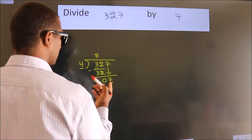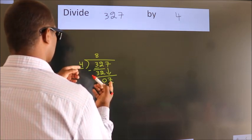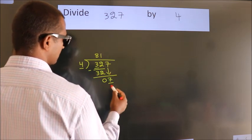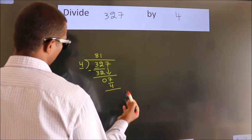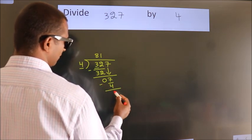A number close to 7 in the 4 table is 4 times 1, which is 4. Now we subtract. We get 3.